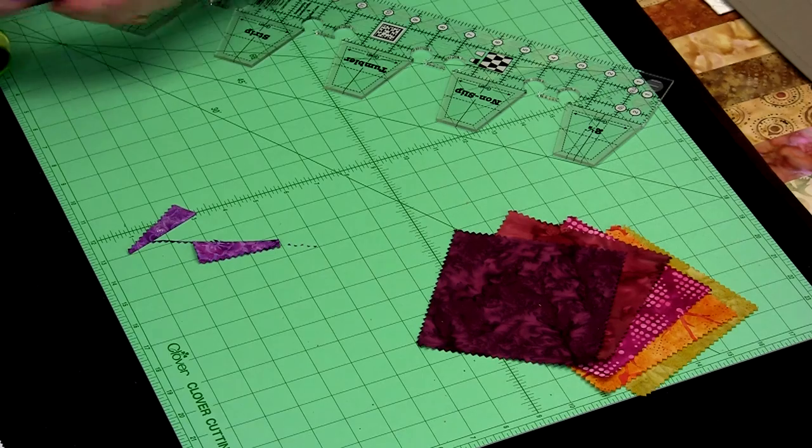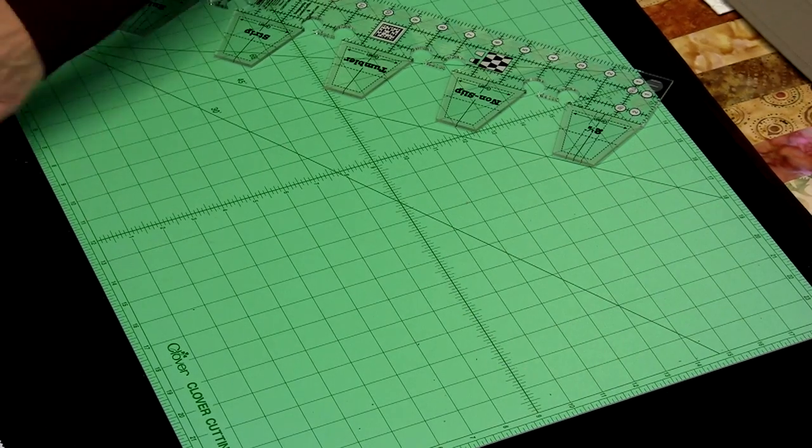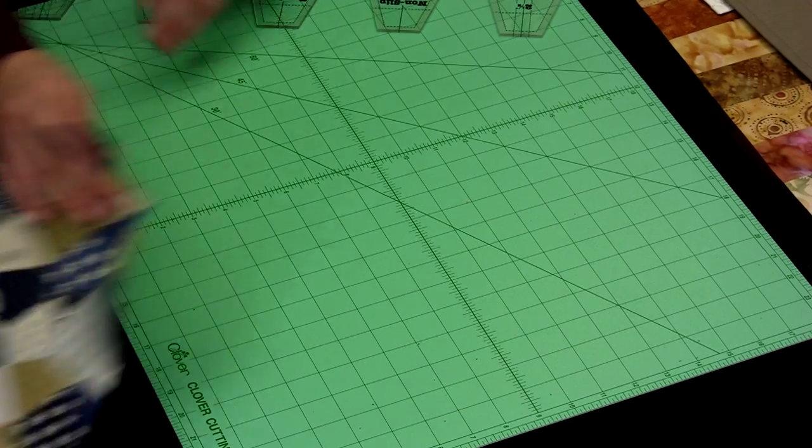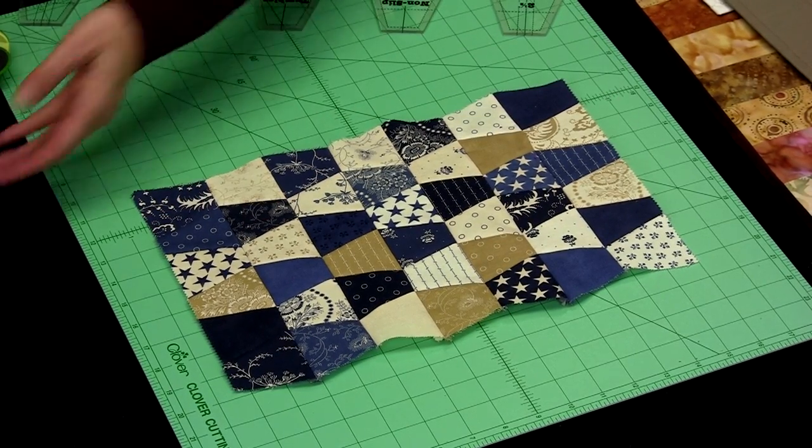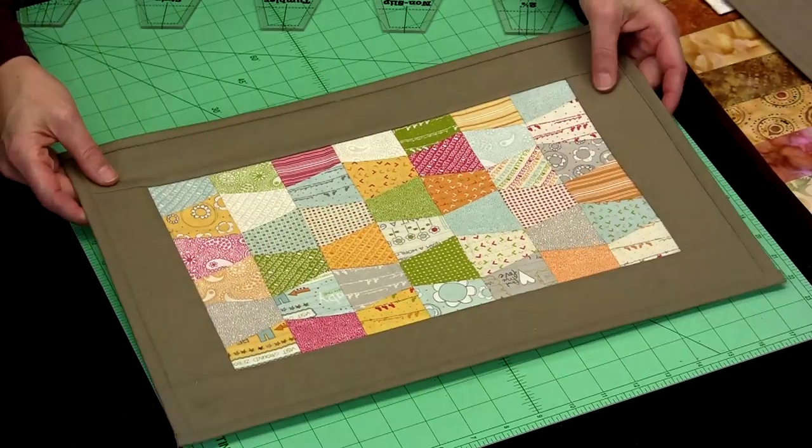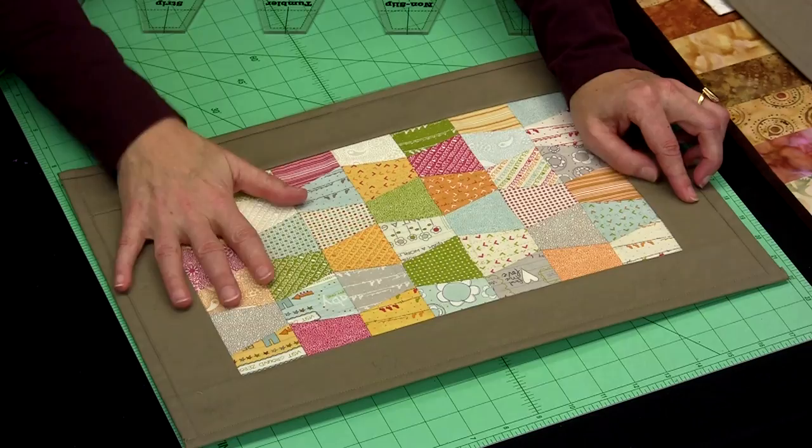So let's look at some projects made using this tool. First of all, from those 2½ inch squares, I put them together in a random fashion, added on a 2½ inch border, brought my back to the front, and I have a placemat.